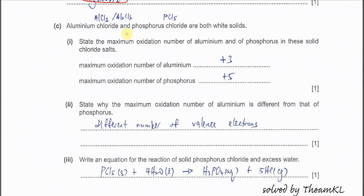Part C. Aluminum chloride and phosphorus chloride. When it's aluminum chloride, most likely it is referred to Al2Cl6. Phosphorus chloride most likely is referred to PCl5. They are both white solids.